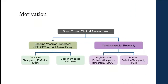The motivation behind our study: in current clinical practice, baseline vascular properties such as cerebral blood flow, cerebral blood volume, and arterial arrival delay are measured using computed tomography perfusion and gadolinium-based DSC MRI, while cerebral vascular reactivity is measured using radionuclide methods such as SPECT or PET, which involve injection of radioactive tracers. Acquiring these measures requires separate visits and exams, increasing the burden on the patient and the overall cost of care. Furthermore, SPECT and PET scans expose patients to ionizing radiation.